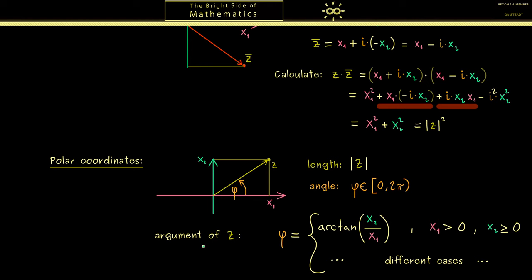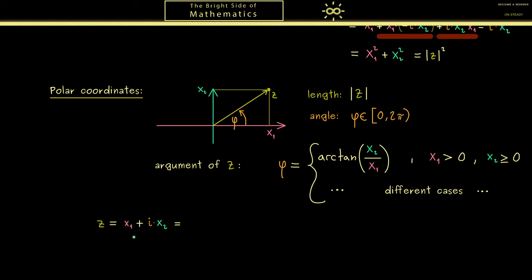Now with these two pieces of information we can write down the complex number in a different form. So you already know you can write down the complex number as x₁ plus i x₂ as before.